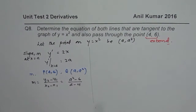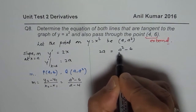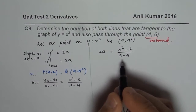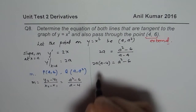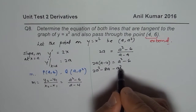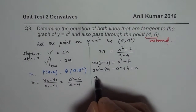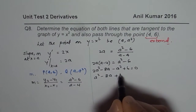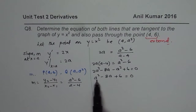Now we know this slope should equal 2A for the same tangent line, so we equate the two slopes. We have 2A = (A² - 6) / (A - 4). Cross-multiplying gives 2A(A - 4) = A² - 6, which expands to 2A² - 8A = A² - 6. Bringing all terms together: A² - 8A + 6 = 0. So that is how we get a quadratic equation, and solving it gives us the value of A.